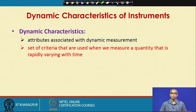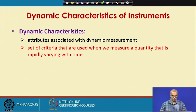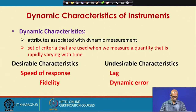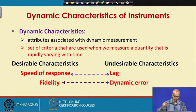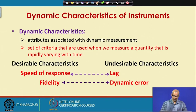We start with dynamic characteristics of instruments. Dynamic characteristics are defined as a set of criteria used when you measure a quantity that is rapidly varying with time — these are the attributes associated with dynamic measurements. We will talk about four different dynamic characteristics: speed of response, lag, fidelity, and dynamic error.